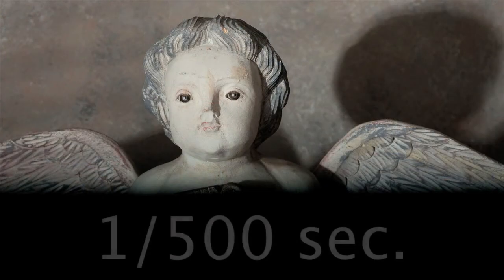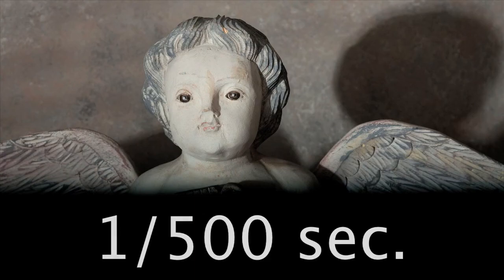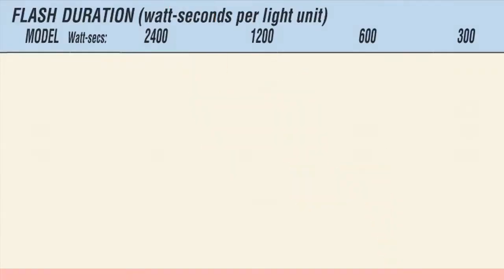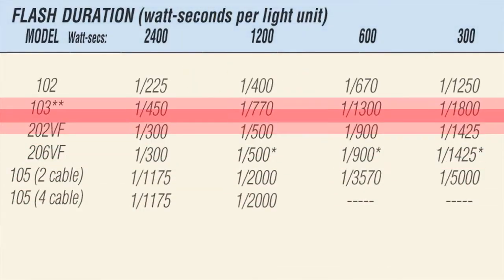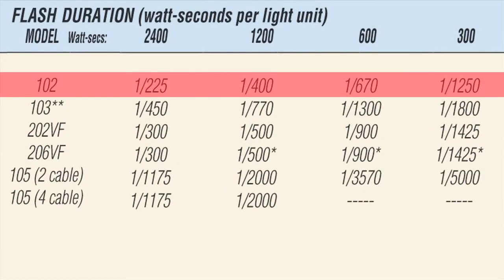Flash duration will vary with power output. As you can see from this chart, the Speedatron units we use range from 1/225th of a second to as brief as 1/1250th of a second at 300 watt seconds. The power output, rated in watt seconds, is directly related to light output. The more watt seconds, the brighter the light when the flash fires, but the slower the flash duration.